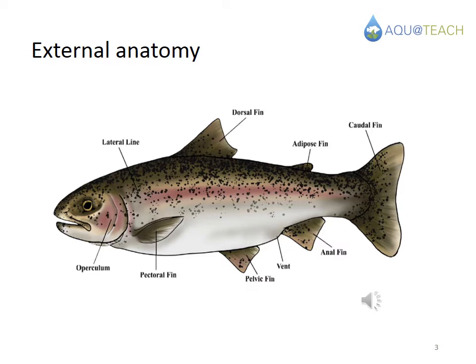Although there are quite a wide variety of fish species, in general in aquaculture most bony fish have common features such as head, trunk, and tail regions. We will review some basic concepts about the eye and nose, the operculum, the skin, and a unique organ called the lateral line, as well as all the different fins on the fish.